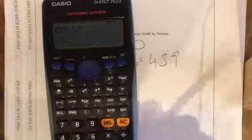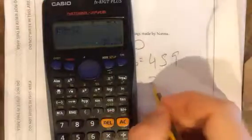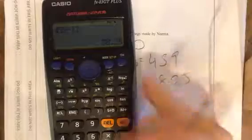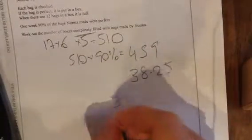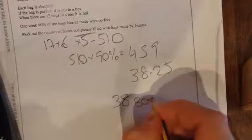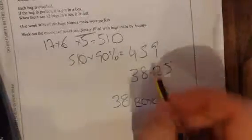So all of these are perfect. All of these are put in boxes. We know there's 12 bags in a box, so I need to divide this by 12, which is 38.25. Work out the number of boxes completely filled with bags by Norma. Now, it's 38 bags—38 boxes, sorry. And because it's 0.25, it's not a full box. So regardless of what this number is, we're going to be rounding this down. The answer's 38 boxes.